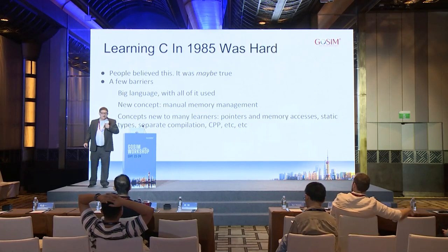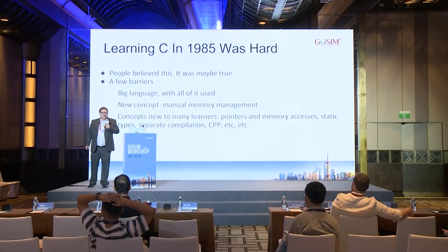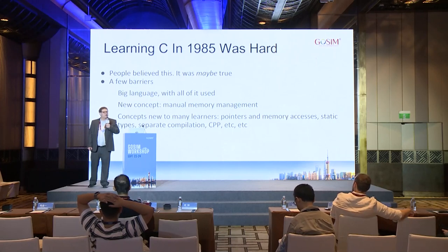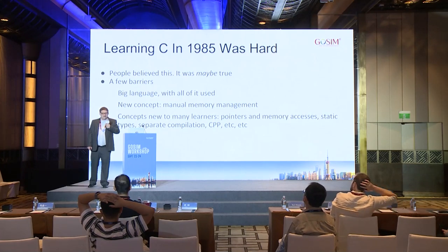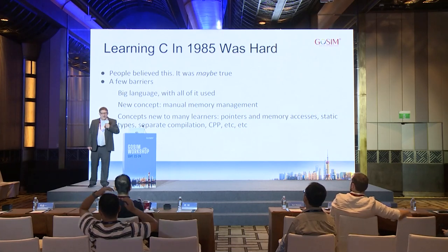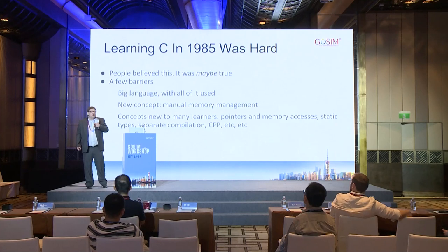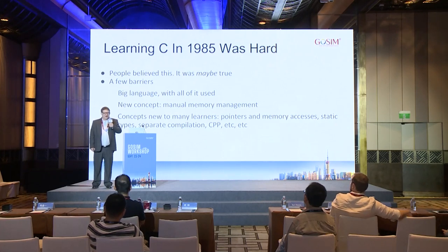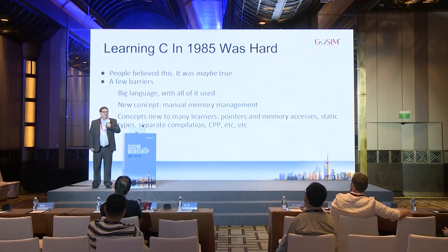We had this new concept — which wasn't really a thing before C — of manual memory management, where you had to call malloc to get memory and free to get rid of it. Previous languages were reference counted or garbage collected or didn't have memory management facilities at all. And so we had to learn how to use malloc and free properly. There were also concepts that weren't new to C, but were new to many learners. Pointers were new, memory accesses, the whole idea of understanding how the machine's memory worked — that was an assembly language programmer thing before C.